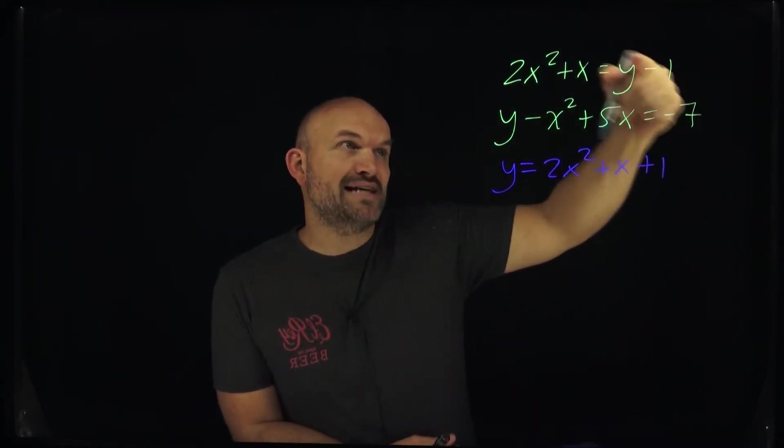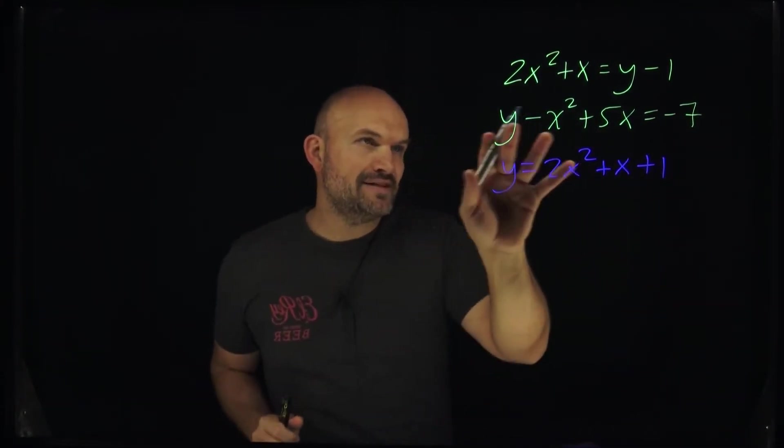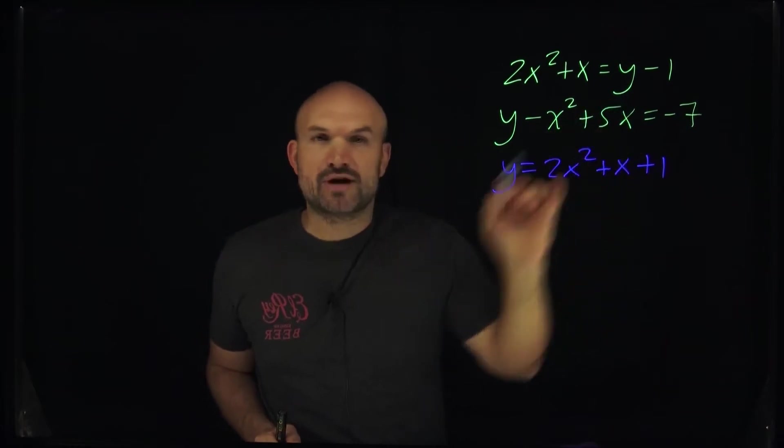So you can see in this first example all I did was add a one to the other side and then I just flip the equation around so I can read it just like this, and the second equation I'm going to add the X squared and subtract the 5X.